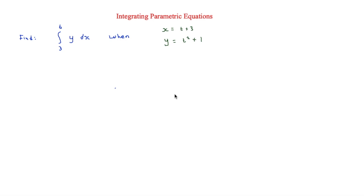In this video we are looking at integrating parametric equations. The first question says: find the integral of y dx, bounded between 6 and 3, when x is equal to t plus 3 and y is equal to t squared plus 1. The main problem is that everything is in terms of t but we need to integrate with respect to x.